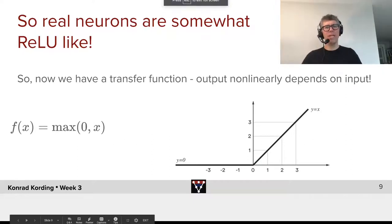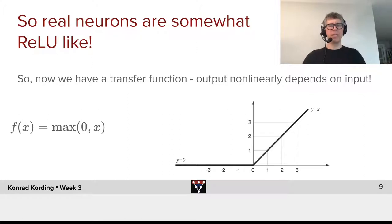So what did we see? Real neurons are somewhat like ReLU units that we use in deep learning. So this is a transfer function. The output depends non-linearly on the input.